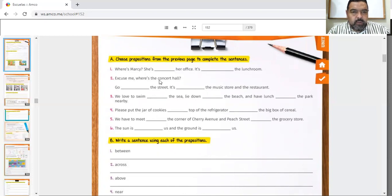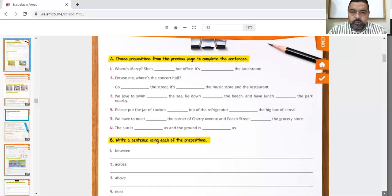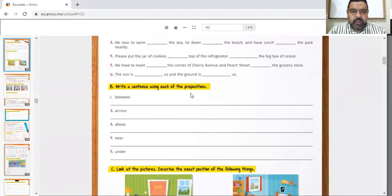Now you have to continue with, excuse me, where's the concert hall? Go, the street, finish that up. Then once you finish that, you have to write a sentence using each of the prepositions. With between, maybe, for example, my house is between a pharmacy and a library. That can be a sentence, but you have to write complete sentences. Not just, I don't know what is between. For example, some people used to do this. Don't do that. Or, I would like to be in between. No, complete sentences with subjects, verbs, adjectives, as possible.